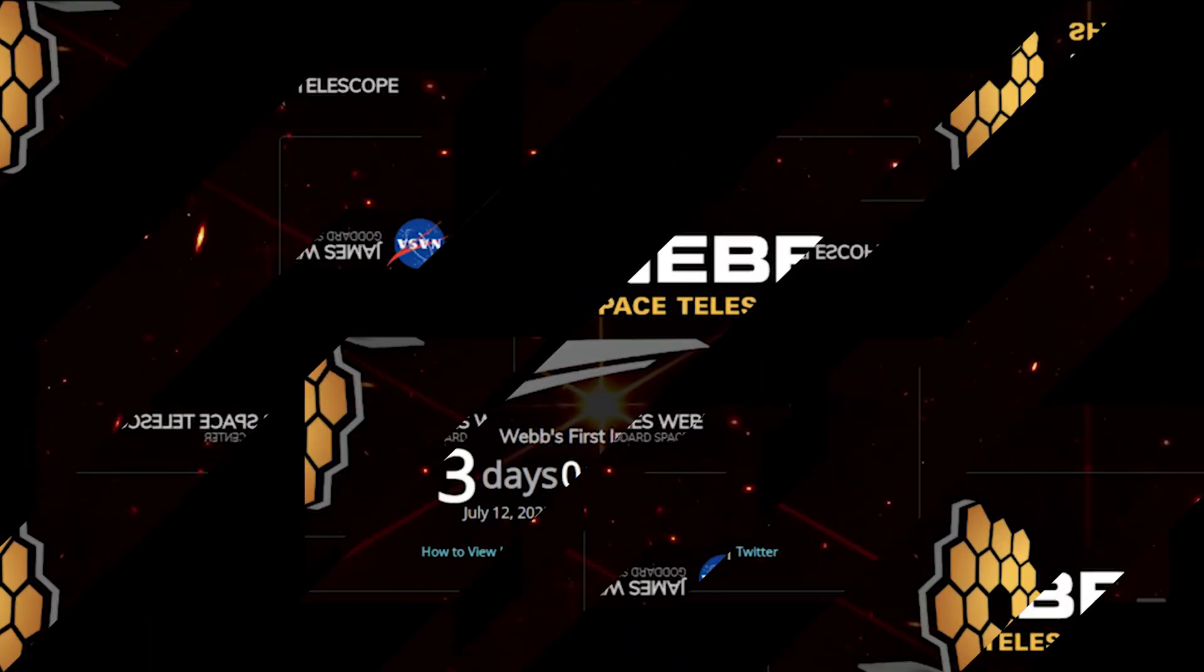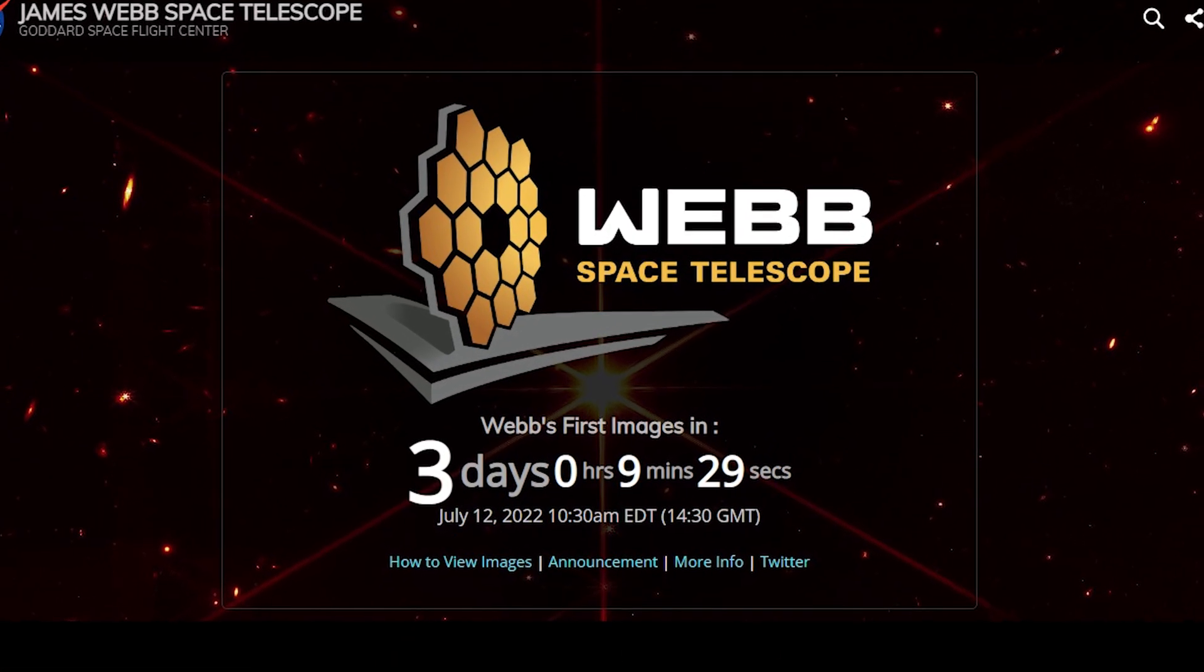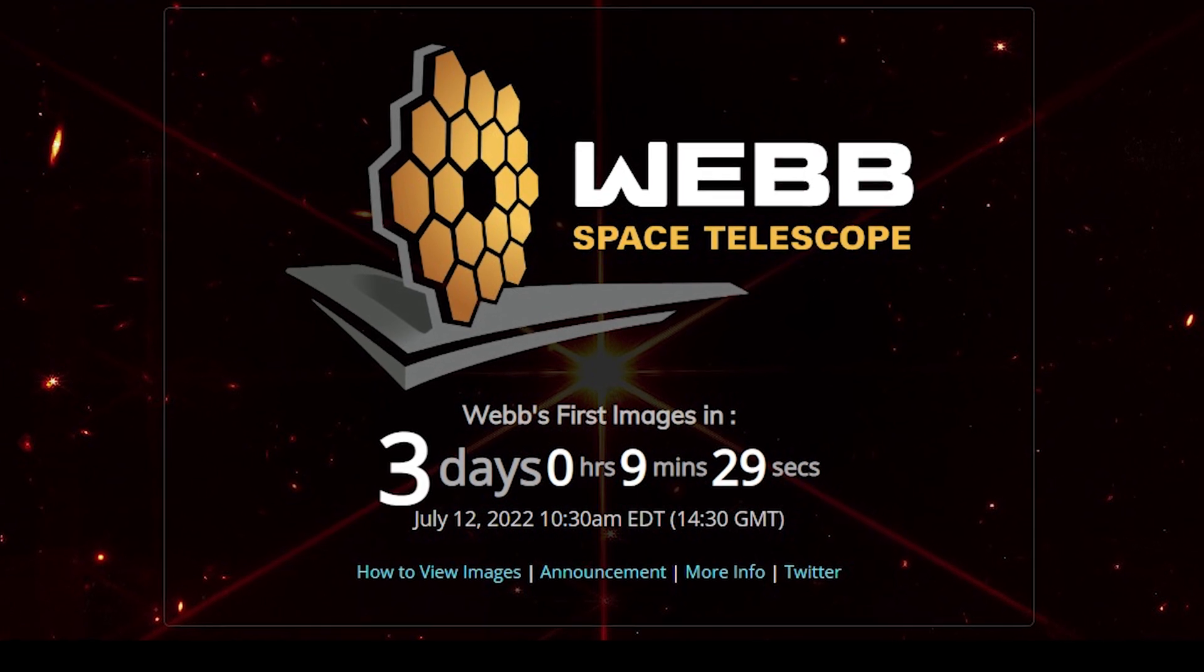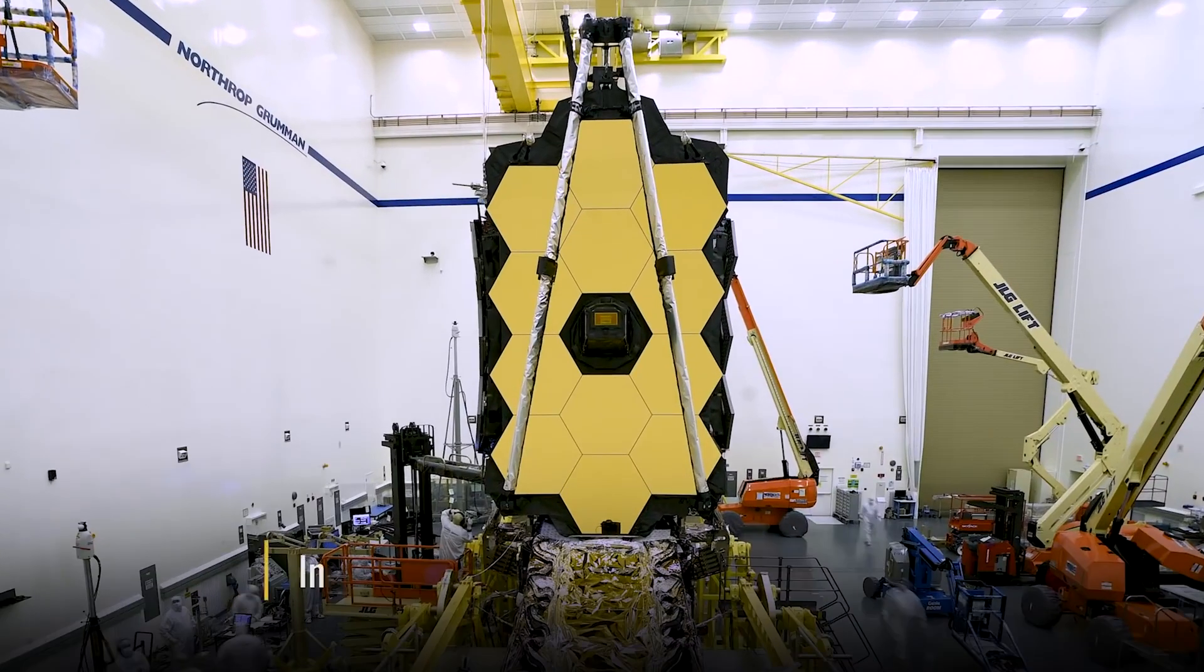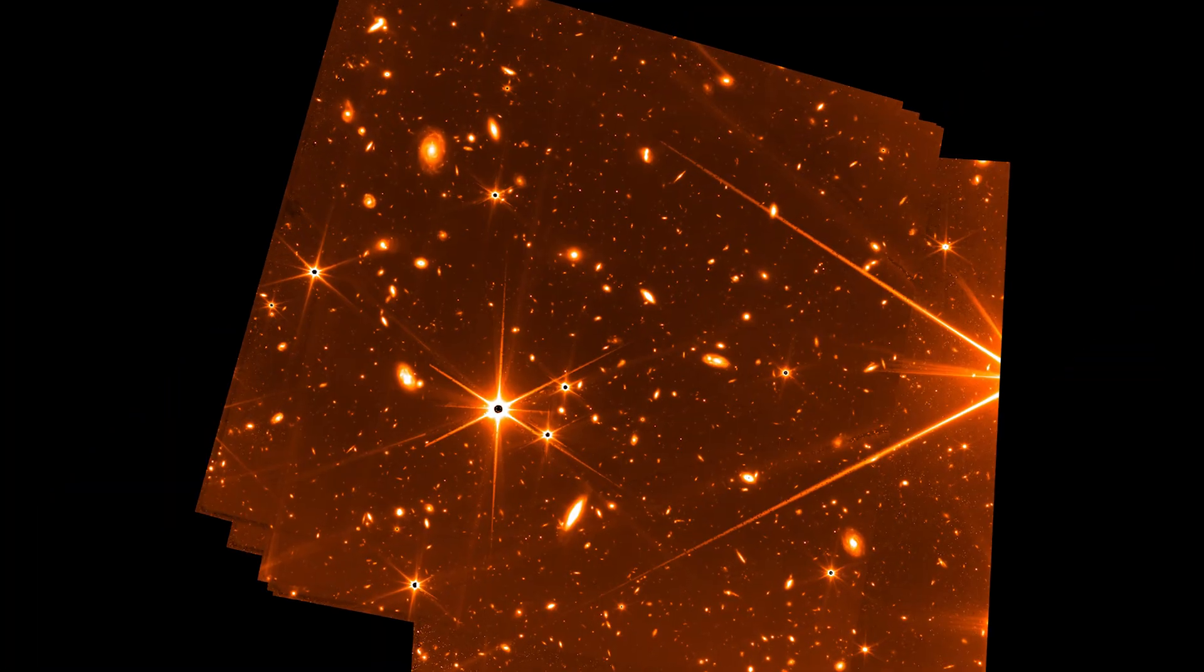The countdown began, and before it even finished, the James Webb telescope has already started sending the most amazing images we have ever seen. Almost like in a theatrical fashion, NASA decided to give a tiny teaser image to help with the anticipation. And the results are out of this world.